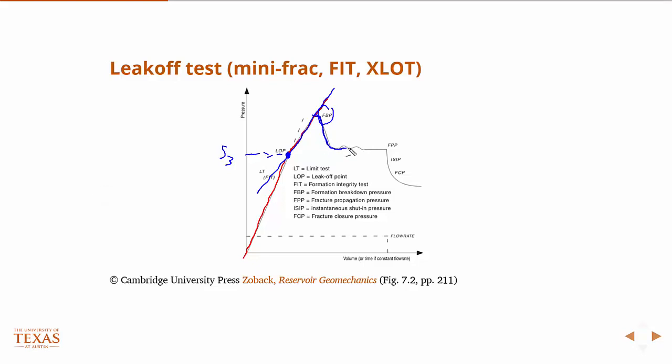At some point you'll reach a relatively constant pressure — this is where you've basically filled your fracture with fluid and it's propagating at more or less a constant rate. This is called the fracture propagation pressure. You'll notice that the fracture propagation pressure is roughly equal to the leak-off point — they correspond relatively well — so this is your second measure of the minimum horizontal principal stress.